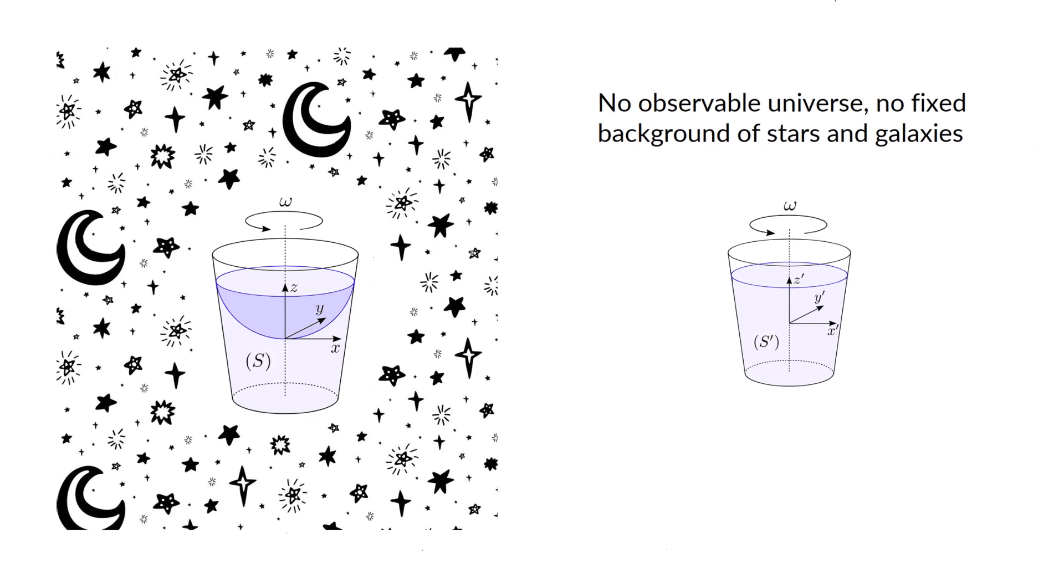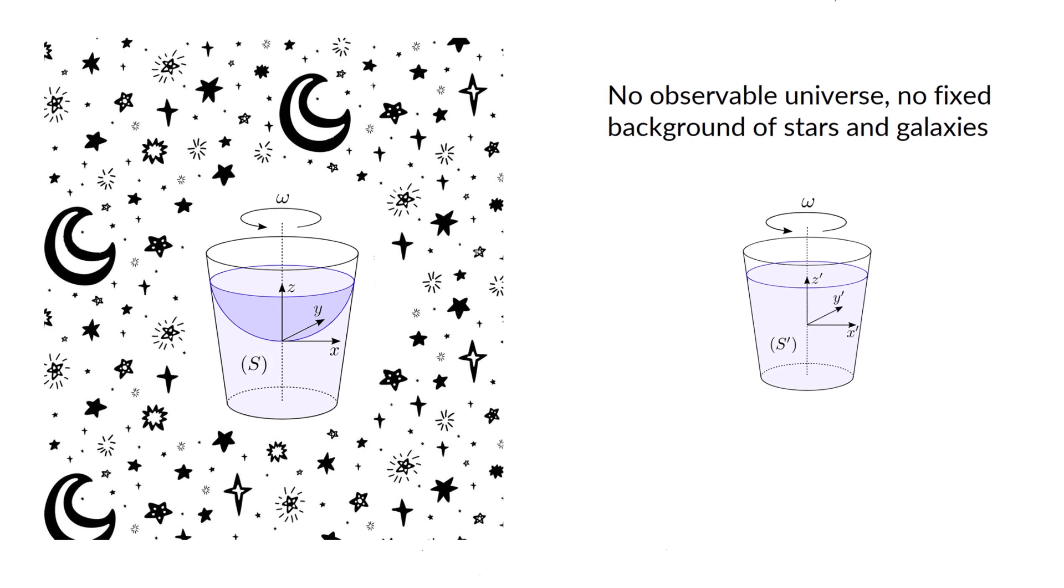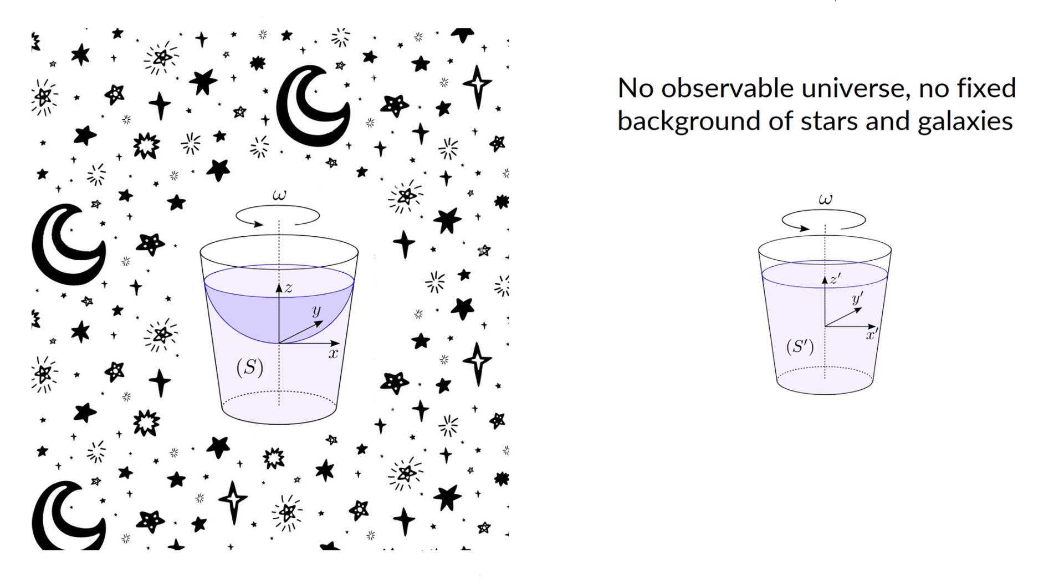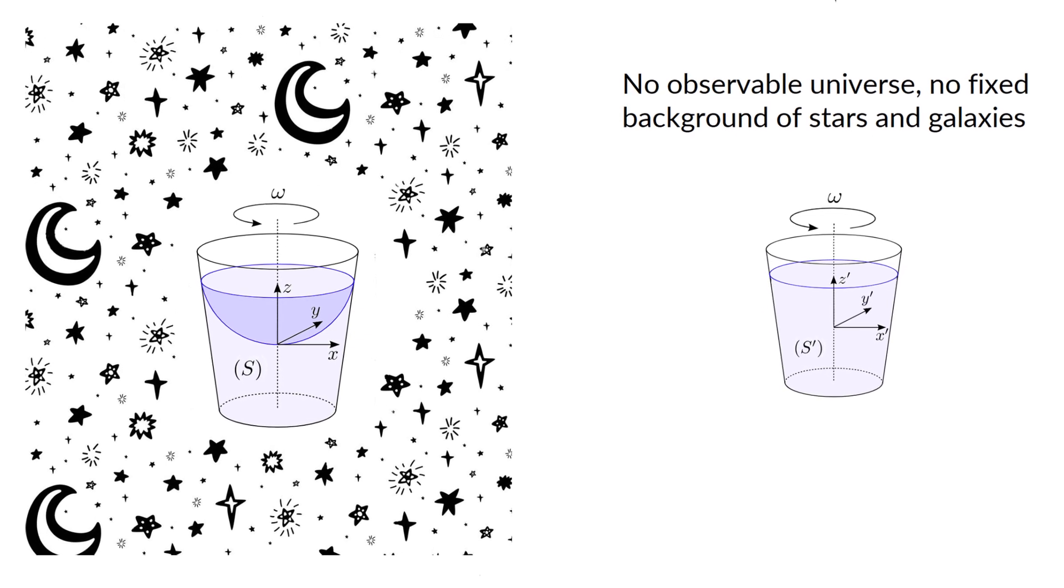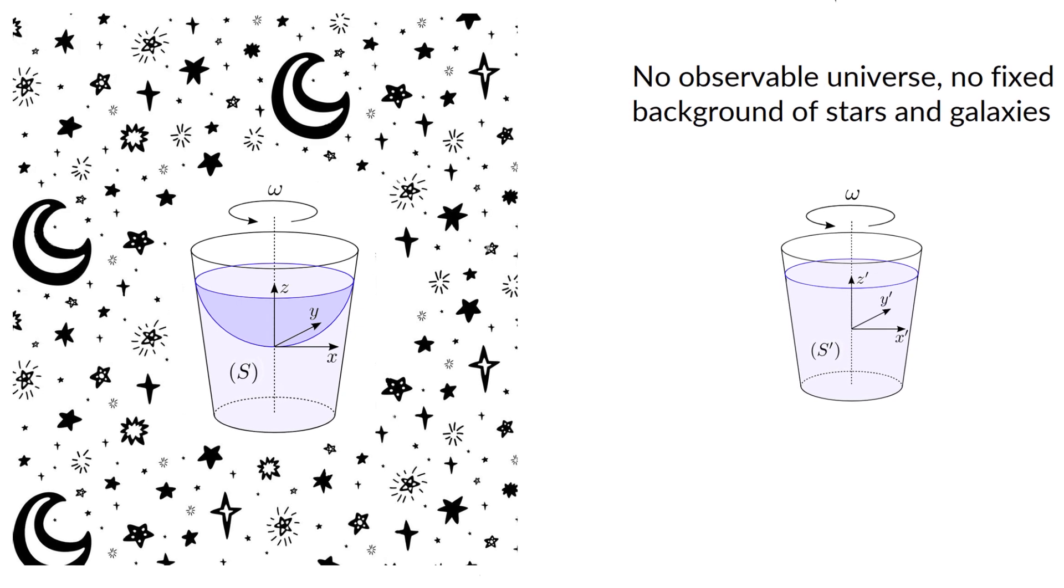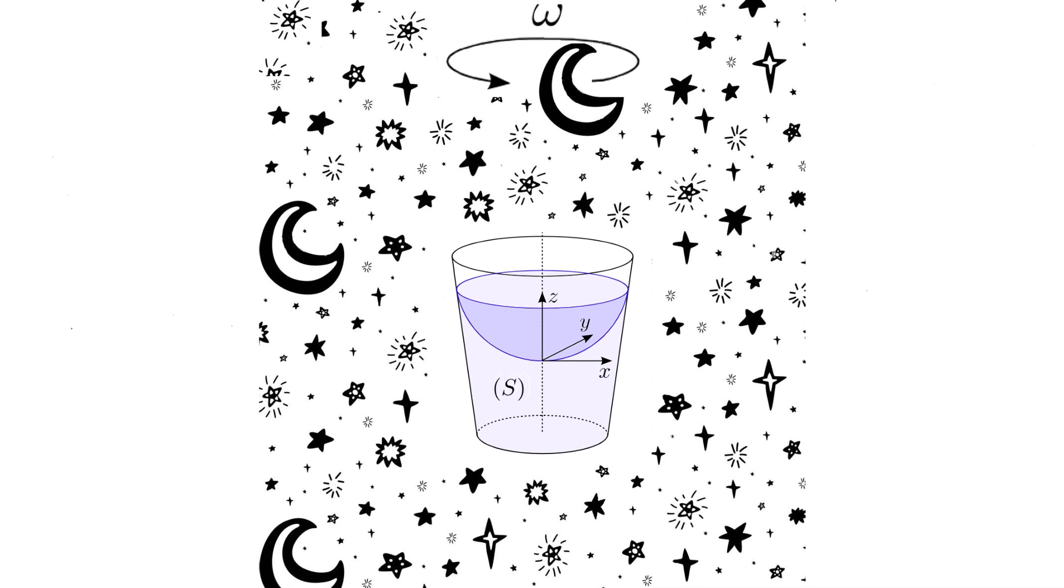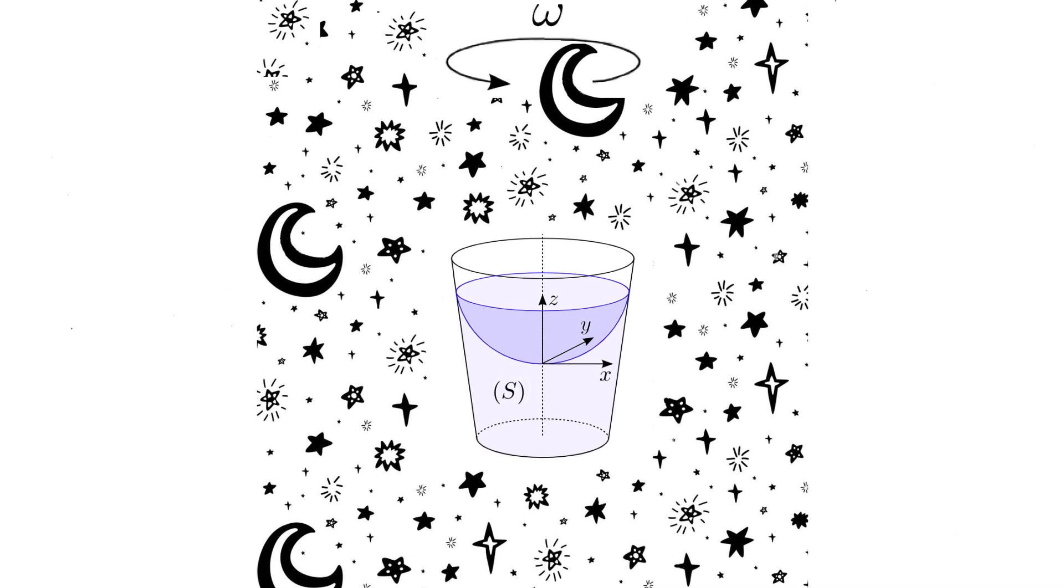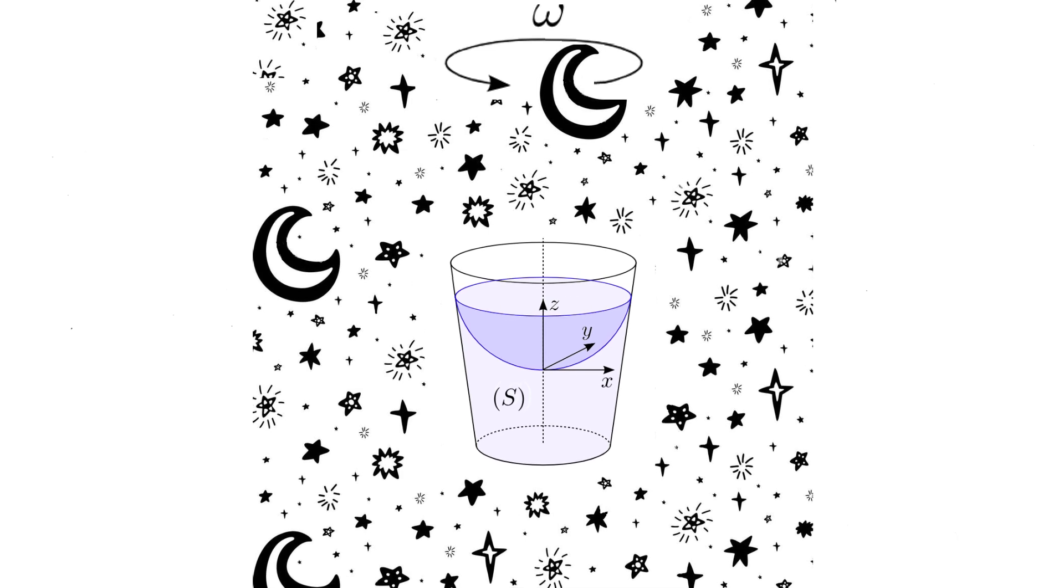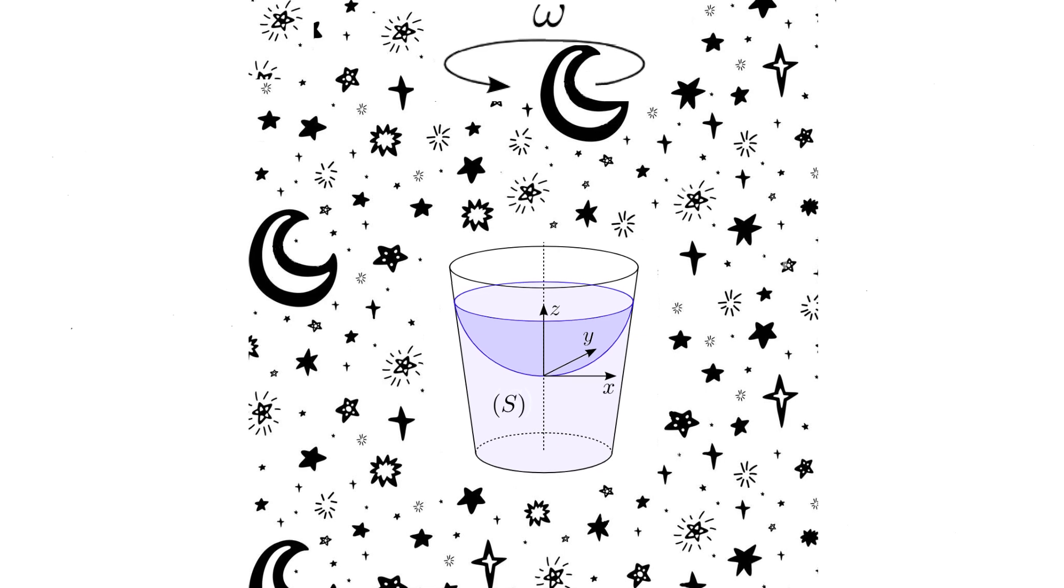According to Mach, and in opposition to Newton's conclusions, a spinning bucket of water in an empty universe would not change the water shape because one could not detect relative motion in an empty universe. It would be undefinable. And if the rest of the universe was set spinning while the bucket was at rest, the water surface would curve, as both the spinning of the bucket or the spinning of the universe are indistinguishable systems without an absolute space.